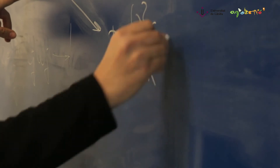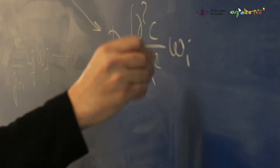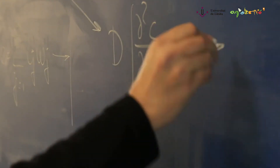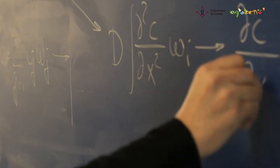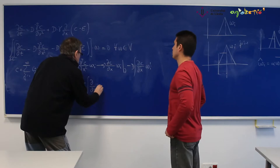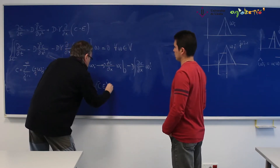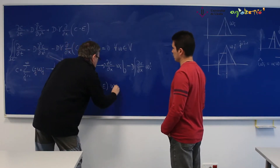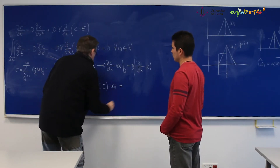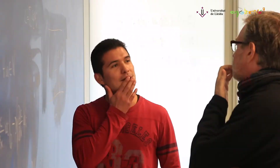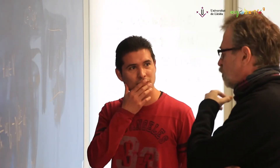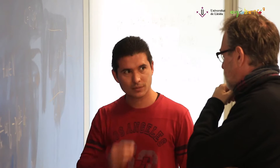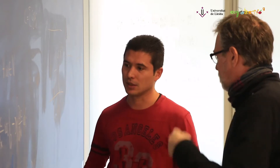The group of Environmental Physical Chemistry is made up by chemists, physicists, and engineers interested in the study of the distribution, transformations, physiological effects and the global cycling of elements in waters, soils, foods or other matrices.